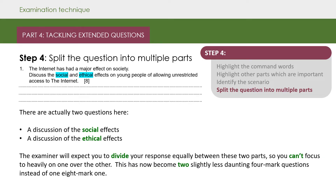The final thing to do with big questions is to try and split the question into multiple parts. This is often very easy to do. So if we look here, we can see there are actually two questions: a discussion of the social effects and a discussion of the ethical effects. The examiner will expect you to divide your response equally between these two parts, so you can't focus too heavily on one over the other.